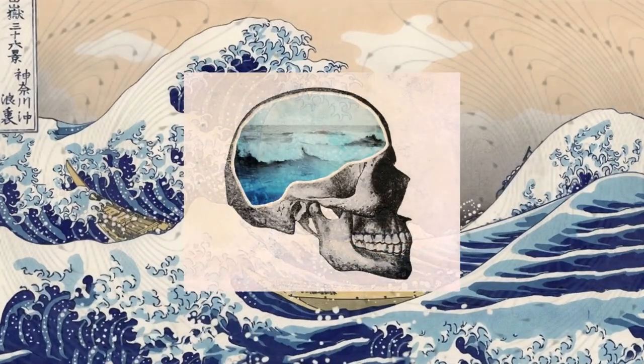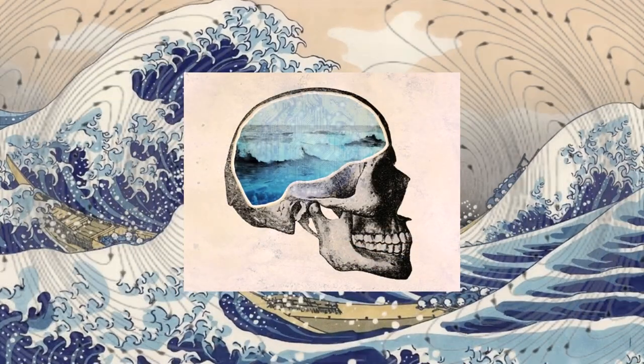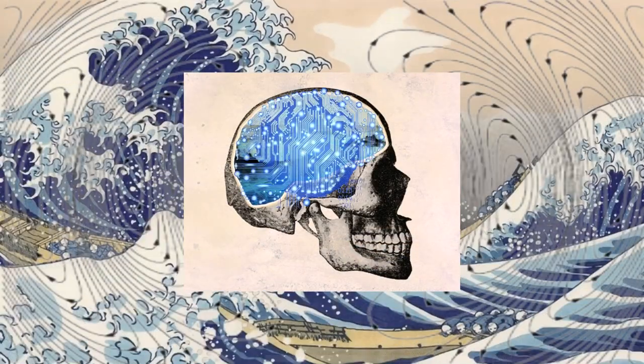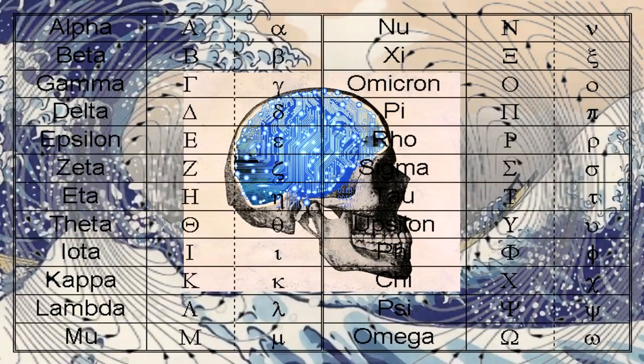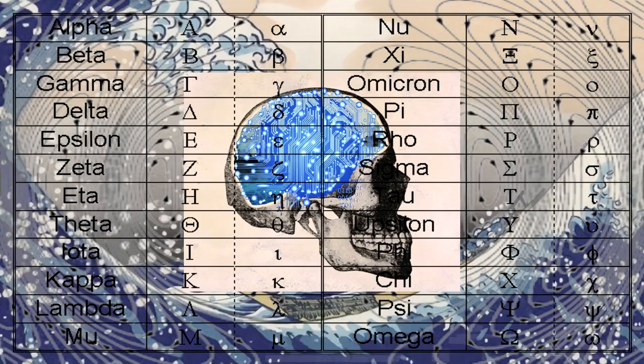Before we create the waves, we must understand the different states of brainwaves, which are labeled after the Greek alphabet, because you know.